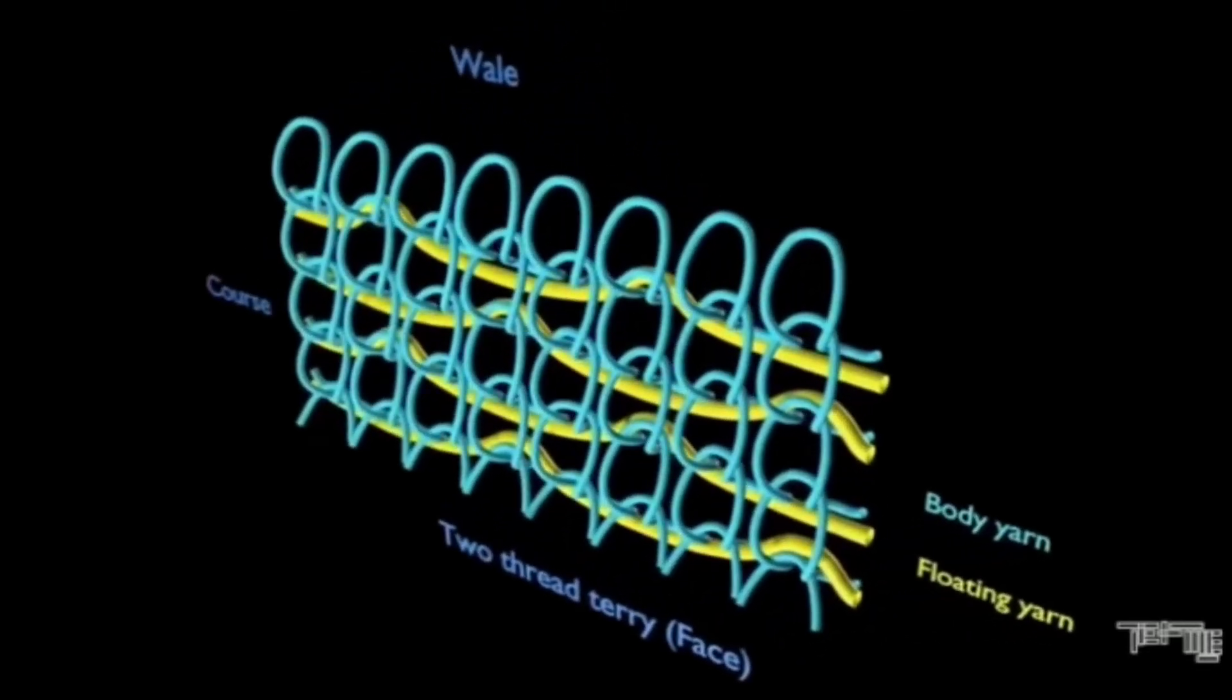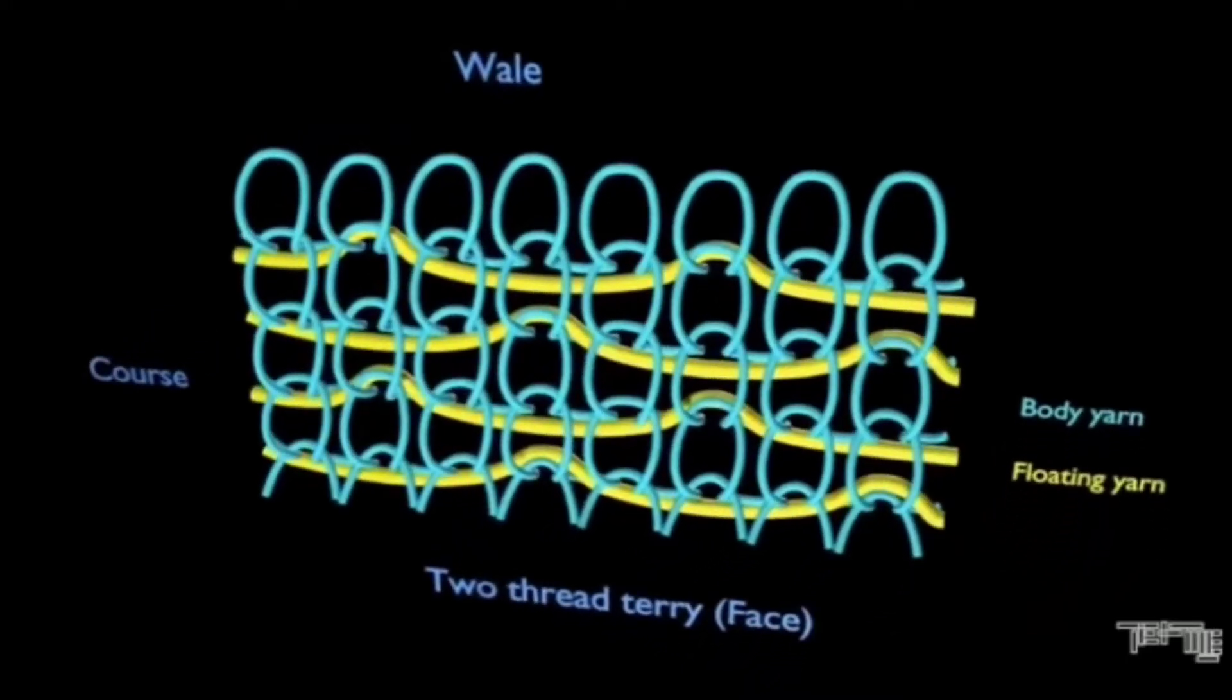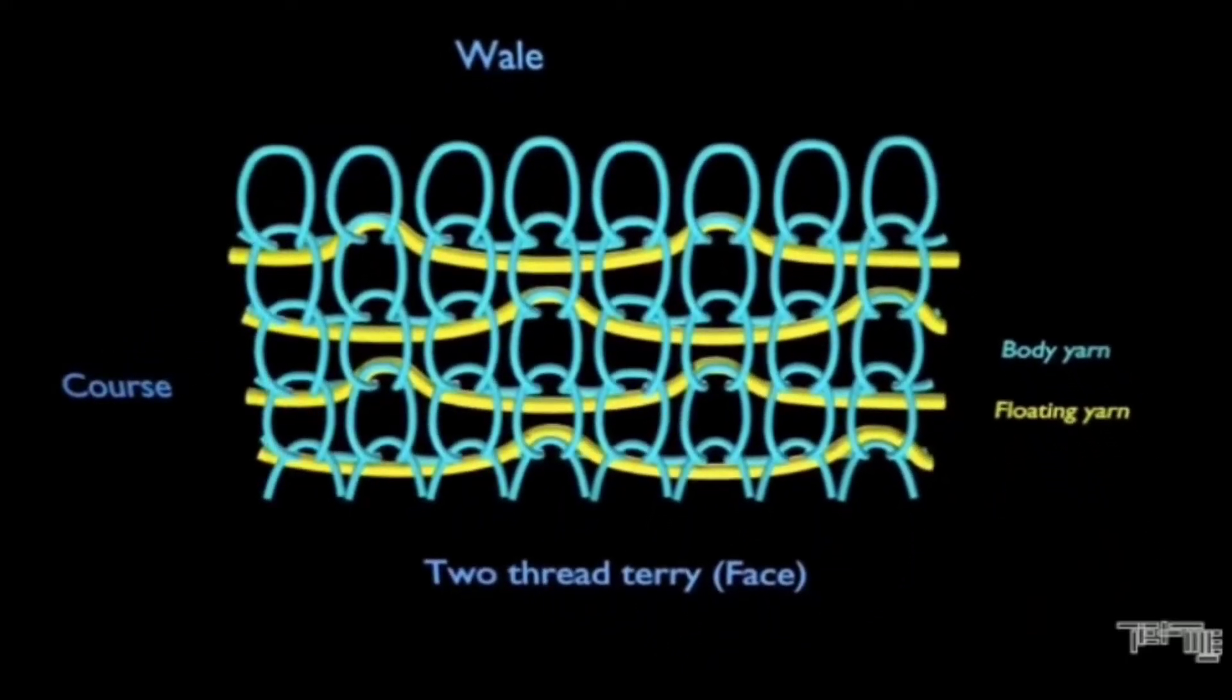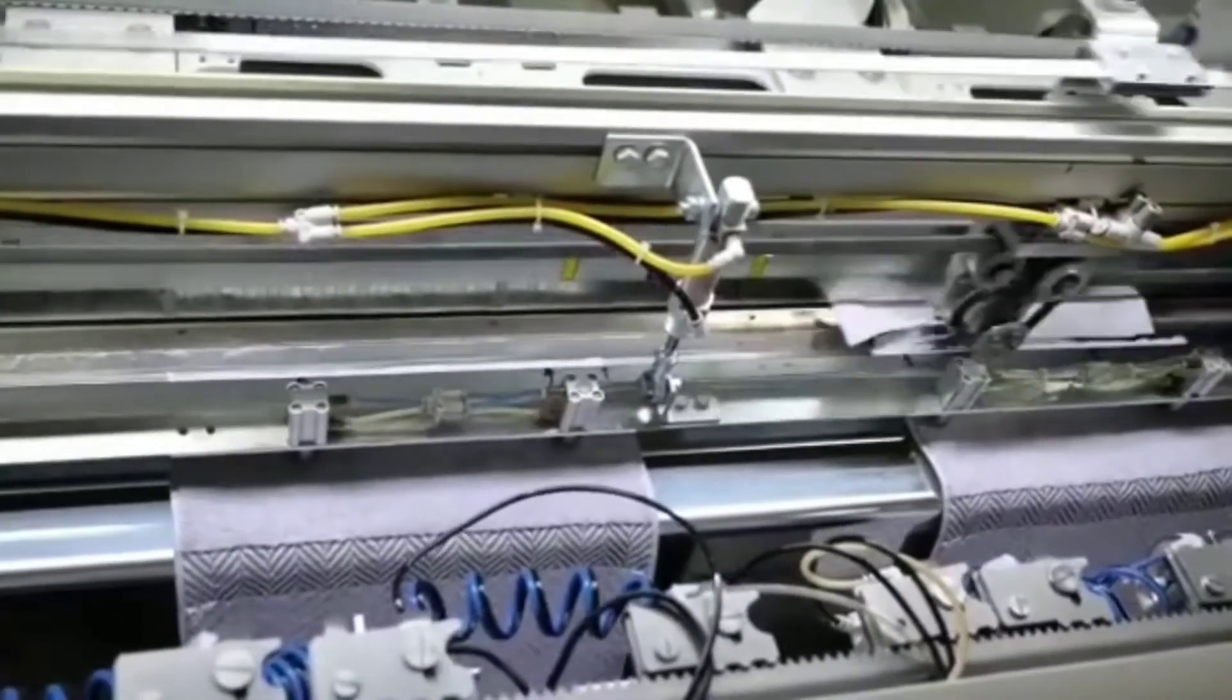In general, two-thread terry fabric is more of a mid-weight fabric and is lighter weight than three-thread fleece. It is commonly used to make everything from sweatpants to pullovers, hoodies, and shorts.